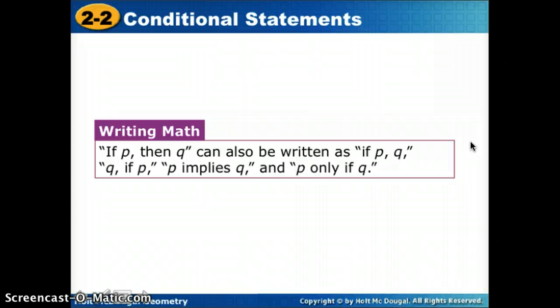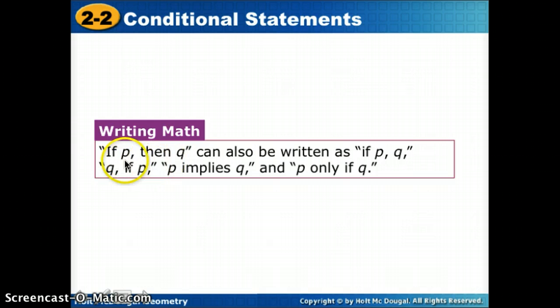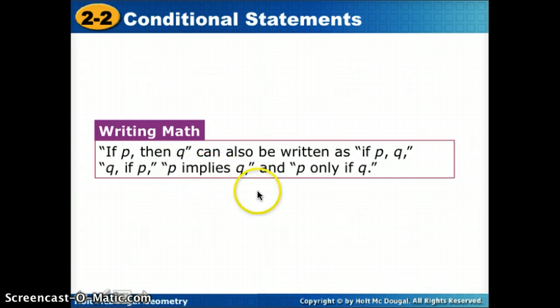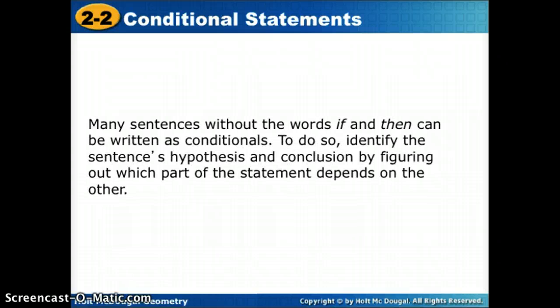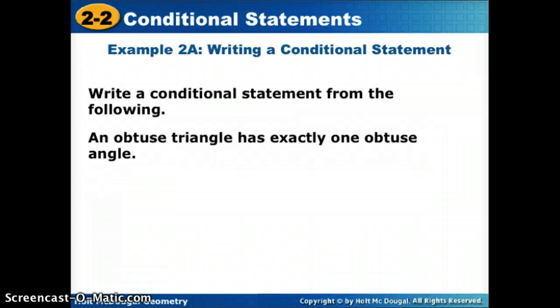We use P to represent our hypothesis and Q to represent our conclusion. There are a couple of different ways you might hear if-then statements: 'If P then Q' could also be written as 'P implies Q,' 'Q if P,' or 'P only if Q.' Most of the time you'll hear 'if P then Q.' Many sentences without the words if-then can still be written as conditionals — we identify the hypothesis and conclusion, then rewrite in if-then form.